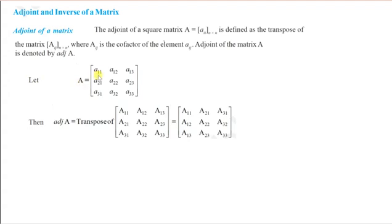Suppose we have matrix A with elements a11, a12, a13, a21, and so on — a square matrix of order 3. Then the adjoint of A will be the transpose of the cofactor matrix, where A11 is the cofactor of element a11. Taking the transpose, rows and columns are interchanged, giving us a11, a21, a31 in the first row, and so on.